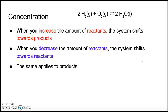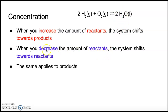The first thing I want to talk about is concentration — what happens when you change the concentration of either the reactants or the products when the system is already at equilibrium. If you increase the amount of reactants, if you add more reactants to your system, the system is going to shift towards products. In this reaction, we've got hydrogen and oxygen forming water. If I add hydrogen gas or oxygen gas, I'm going to shift my equilibrium towards the product and form more water. If I decrease the amount of reactants, the system is going to shift back towards the reactants to make up for what was lost. So if I remove hydrogen gas from my reaction mixture, the water is going to start turning back into hydrogen and oxygen to replace what's been taken away.